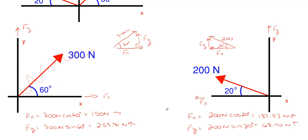You have to make sure these Fx and Fy values make sense. Since the 200 newton force is only 20 degrees off the x-axis, more of it should be in the horizontal direction — it's 70 degrees away from the y-axis. So the distribution should be more towards x, and that's exactly what we see: 187.93 in the horizontal versus only 68.40 in the vertical.